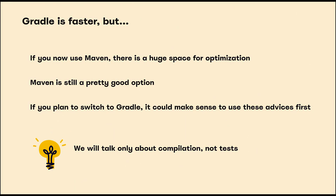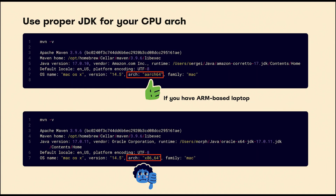Surprisingly, Maven has a lot of opportunities to optimize your build. We'll talk about compilation mostly. Let's start with something simple: I hope your engineers are already using Apple Silicon laptops. You just need to ensure which actual JVM they are using, because Rosetta gives overhead over executions.